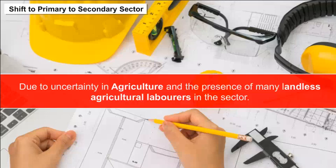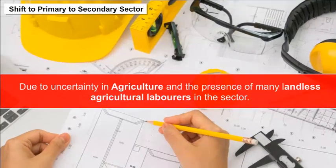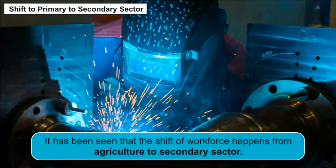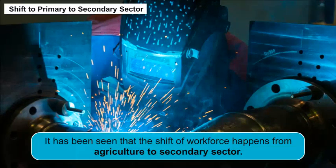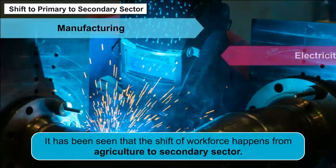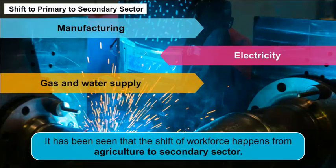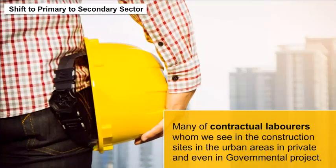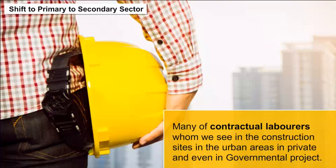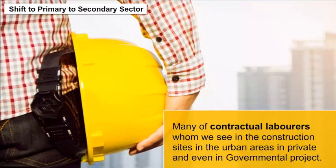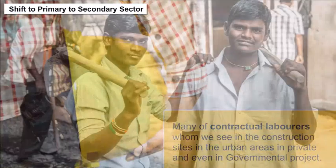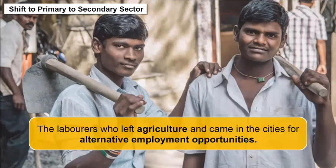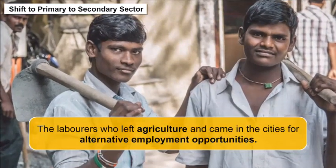Shift from primary to secondary sector: Due to uncertainty in agriculture and the presence of many landless agricultural laborers, a shift of workforce happens from agriculture to the secondary sector — such as manufacturing, electricity, gas, water supply, and construction industries. Many of the contractual laborers seen in construction sites in urban areas, both in private and governmental projects, are laborers who left agriculture and came to cities seeking alternative employment opportunities.